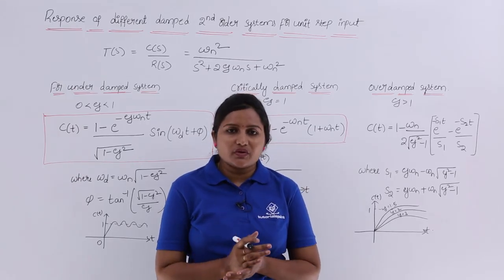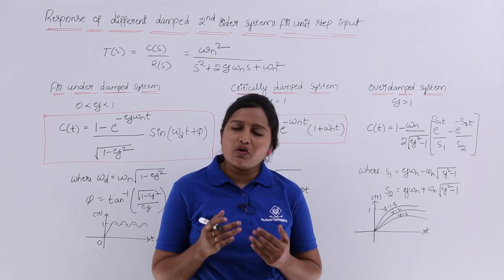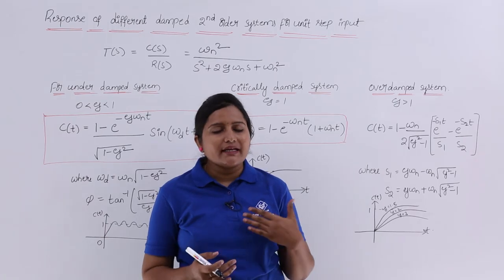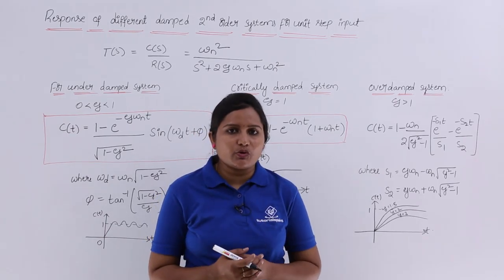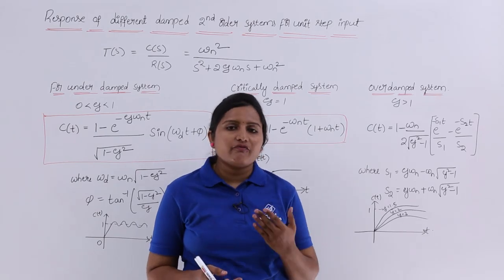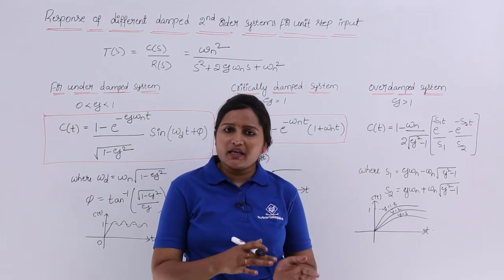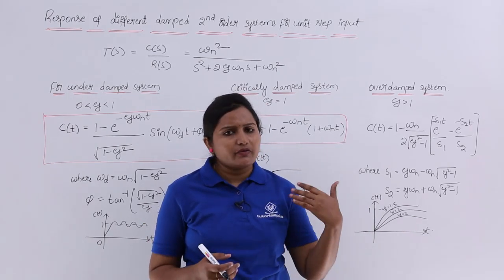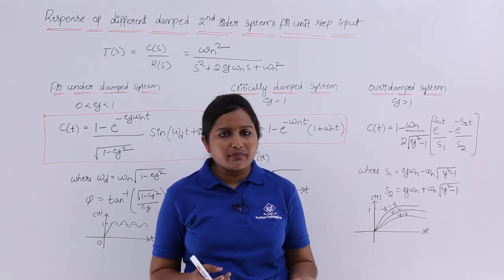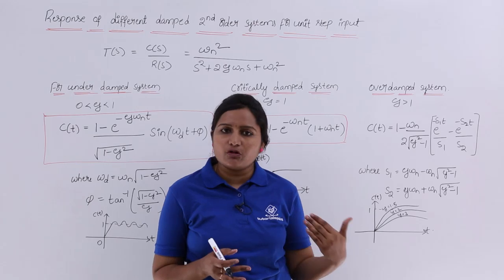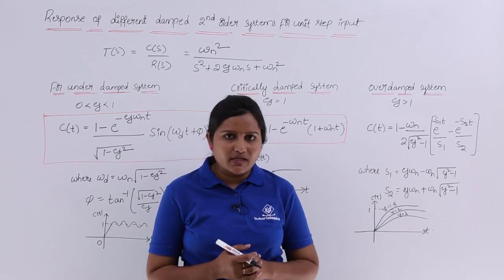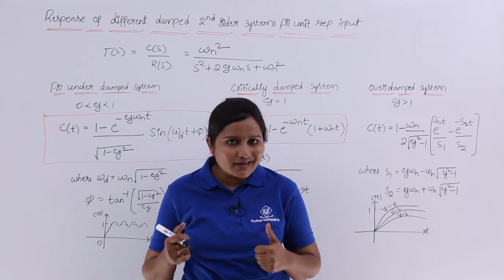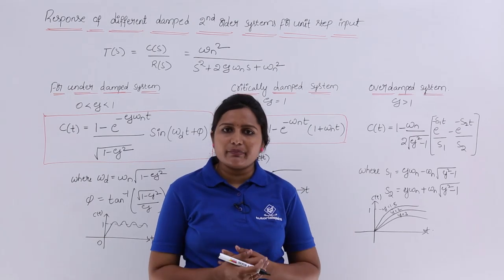In this video I am going to discuss the response of second order systems — that means differently damped second order systems for unit step input. In the previous video we saw the time response of undamped second order system for unit step input. In the same way we can find the response for under-damped, critically damped, or over-damped systems by following the same procedure. Here I am giving the final equations or final response of the system for differently damped second order systems.